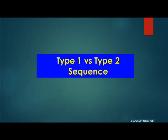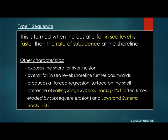A Type 1 sequence is formed when the global sea level fall has occurred at a faster rate than that of subsidence at the shoreline. That means at the global scale, sea level had fallen much faster than the rate of subsidence at the shoreline. When that happens, you have sub-aerial exposure of parts of the shore, and with that exposure comes all forms of river and shoreline erosion.